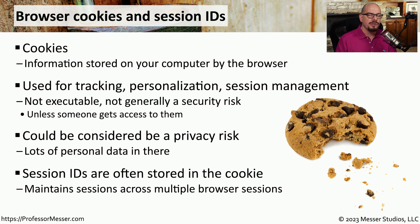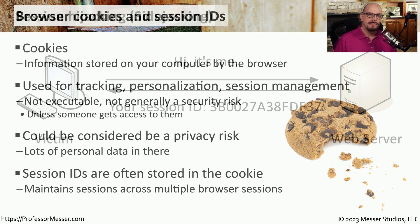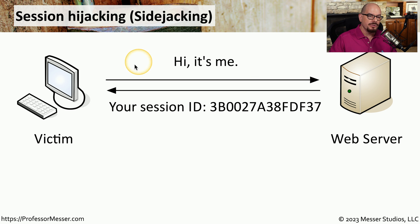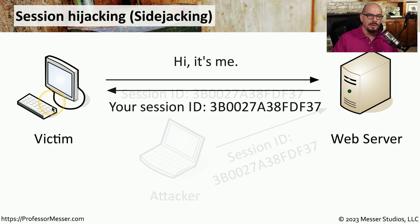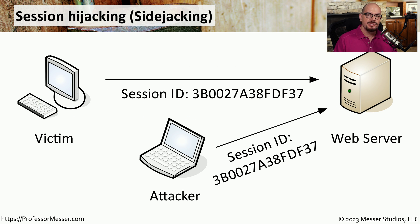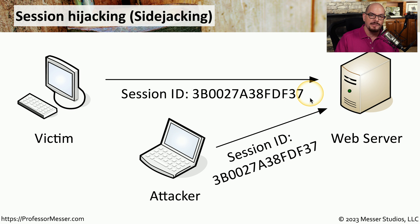The information an attacker would most want to pull from cookies is a session ID. This session ID could be used to gain access to a server without needing any login credentials from the victim. Session hijacking, or sidejacking, occurs when a user authenticates with a web server by providing a username and password, and a session ID is sent back to the victim's computer. If the attacker gains access to that session ID, they can use it for subsequent sessions, and the web server thinks it's coming from the original logged-in victim's machine — giving the attacker access to everything the victim has on that server.